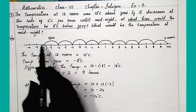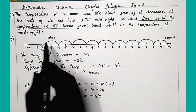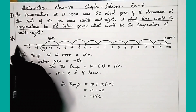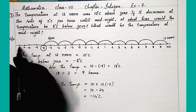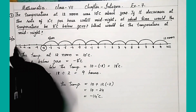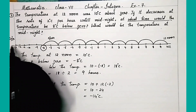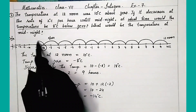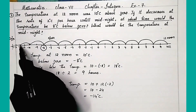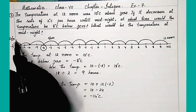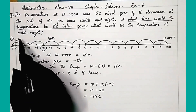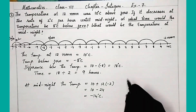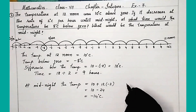We can verify this another way. After 9 hours the temperature is minus 8, and after 3 more hours — at hours 10, 11, and 12 — the temperature continues to minus 11, minus 12, minus 13, and minus 14. So after 12 hours, at midnight, the temperature will be minus 14 degrees Celsius. Hope you understood this problem. Thank you so much.